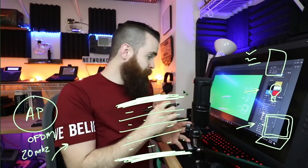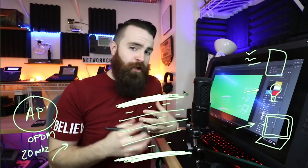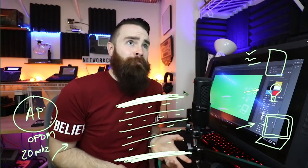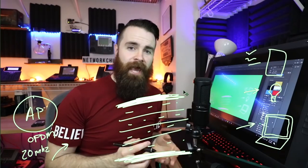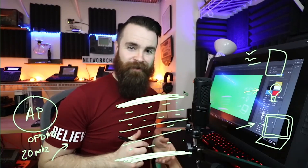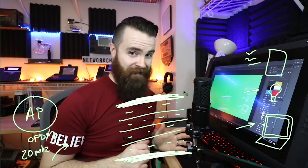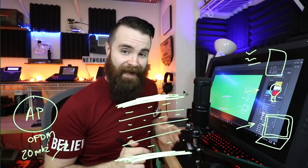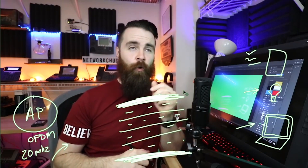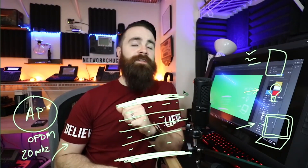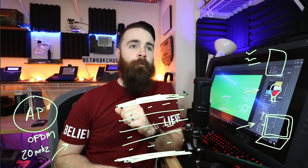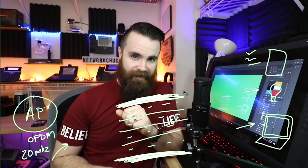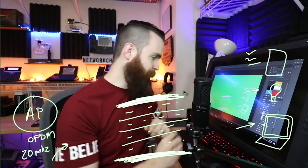So with Wi-Fi 6, we take that OFDM — the Orthogonal Frequency Division Multiplexing — and we add one more letter to it to make it amazing. We add an A, so now it's Orthogonal Frequency Division Multiple Access. Let me add that A there.